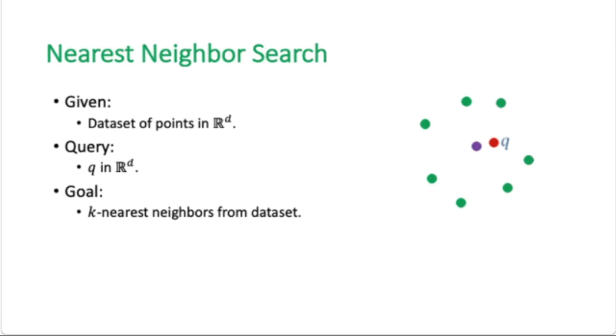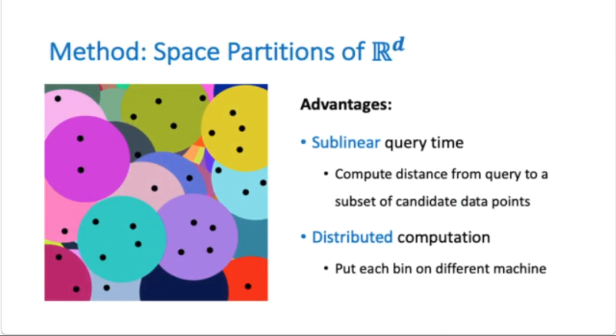One useful method to find approximate nearest neighbors is by space partitions. In this method, we partition the space into regions where each region contains a subset of the data points. For example, in this picture, you can see the regions marked in different colors. Given a query point, we check which region it belongs to and look for nearest neighbors within that region and possibly nearby regions. The more regions we search, the longer it takes, but the more accurate the nearest neighbors will be.